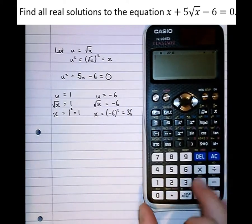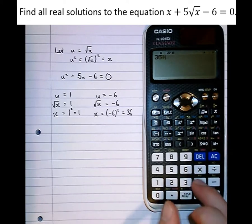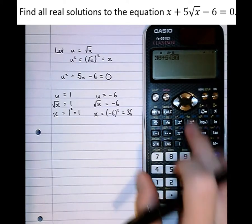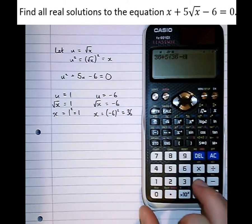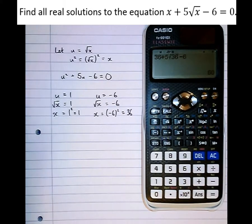Let's try the other. 36 plus 5 root 36 minus 6 equals 60. Doesn't equal 0, so something's gone wrong.